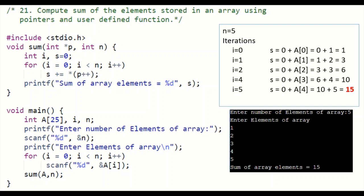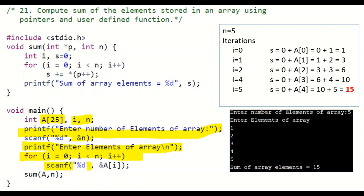This is a program to compute the sum of elements stored in an array using pointers and user-defined functions. In the main program, an array is declared as a of 25, and two variables i and n — i for the counter and n for the number of elements of the array. You are first entering the number of elements and then the elements of the array using a for loop and scanner functions.